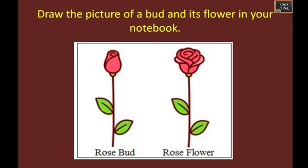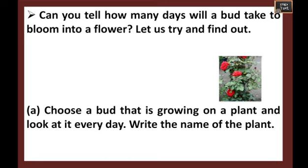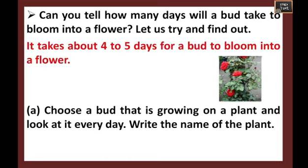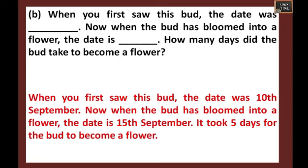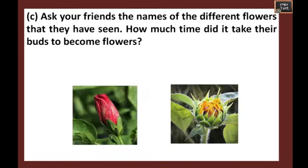Draw the picture of a bud and its flower in your notebook. Can you tell how many days a bud will take to bloom into a flower? It takes about four to five days depending upon the flower or bud you choose. Choose a bud growing on a plant and look at it every day. Write the name of the plant — I have written 'rose plant.' When you first saw this bud, the date was — I have written 10th September. When the bud blossomed into the flower, write that date. For me it took five days. You can mention your own date.